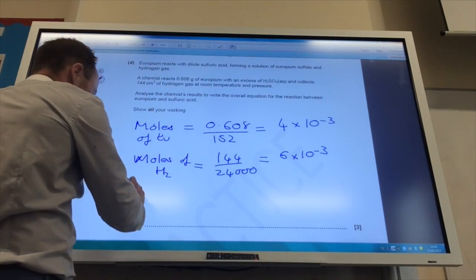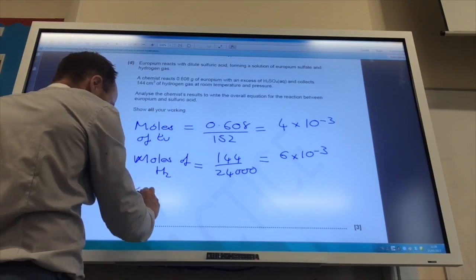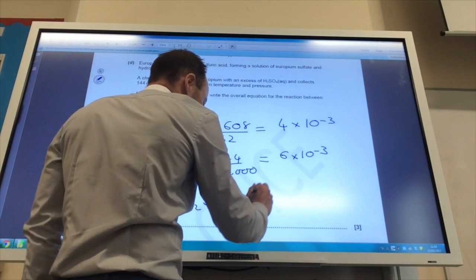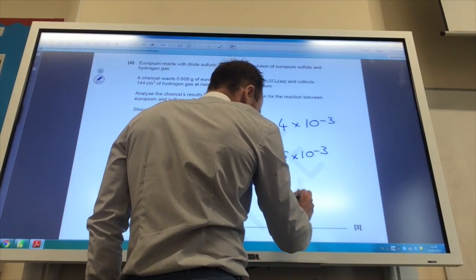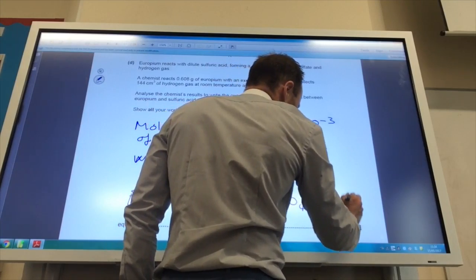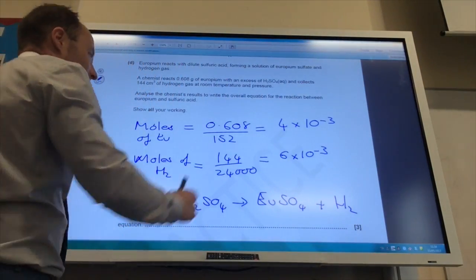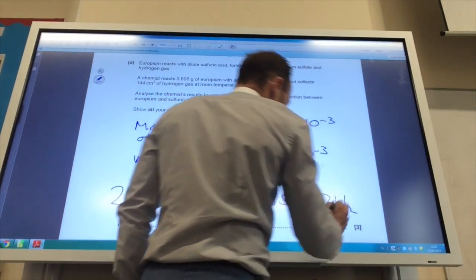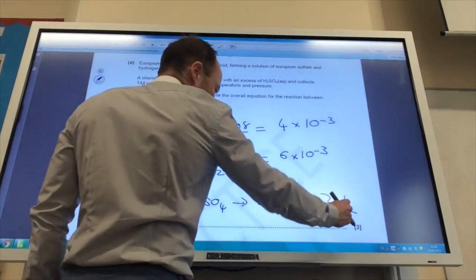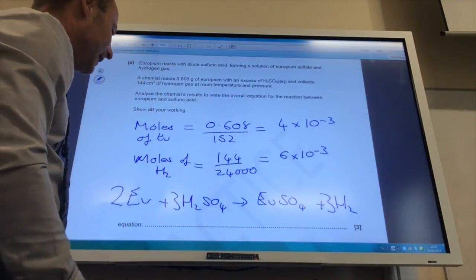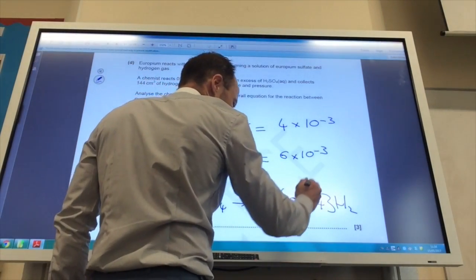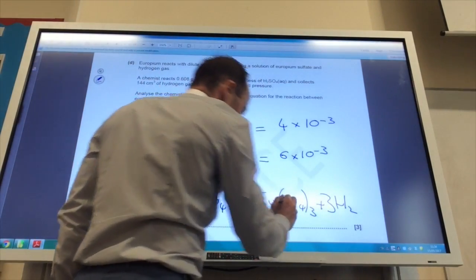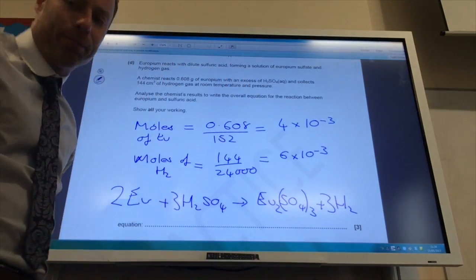Okay, so we know we've got europium plus sulfuric acid goes to give me europium sulfate, but I don't know the formula of europium sulfate, plus H2. But what I do know is for every 2 europiums, I need 3 hydrogens. If I've got 3 there, I must have a 3 there to get it balanced. If I've got a 3 there, I must have 3 sulfates there, and I've got 2 europiums there, which means I've got a 2 there.